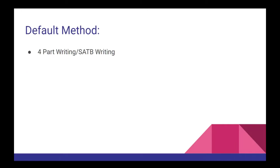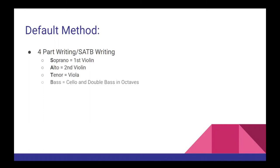The default method for writing string parts is to use four-part voicing, or SATB voicing. In this configuration the first violin is treated as the soprano voice, the second violin as the alto voice, the viola as the tenor voice, and the cello and double bass are both seen as the bass voice, sharing it and playing it in octaves.